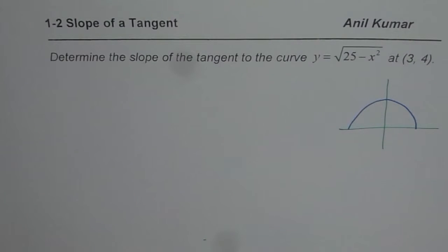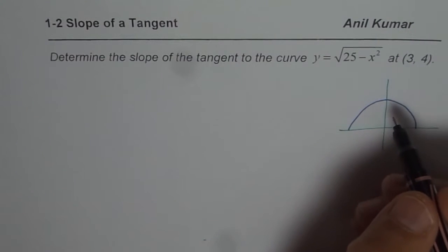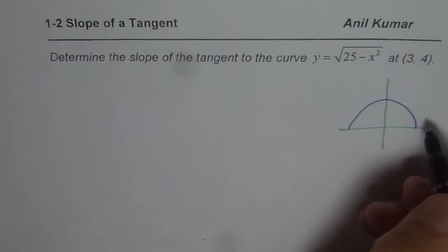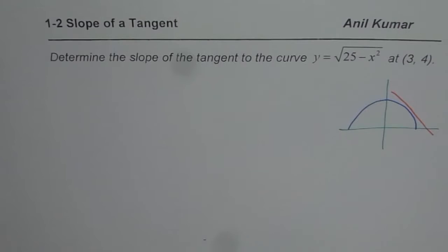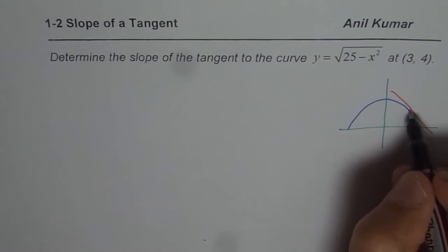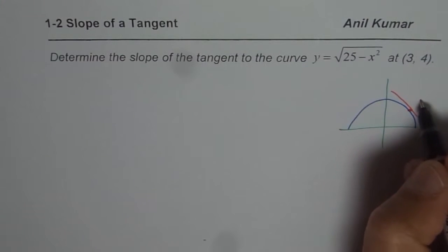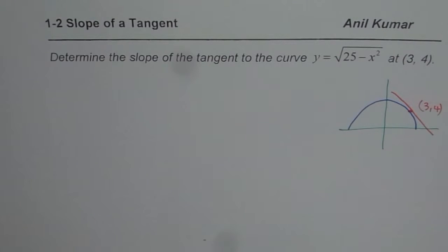We want to find a slope of the tangent at a point 3, 4 which will be around here. So let me just draw a line here. It didn't touch but it should. So that point should be touching it and this point is 3, 4 for us. So we want slope of this tangent line.